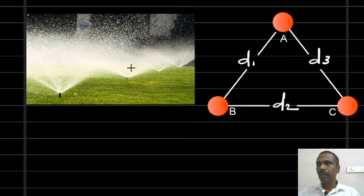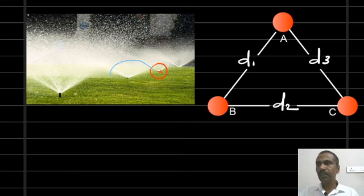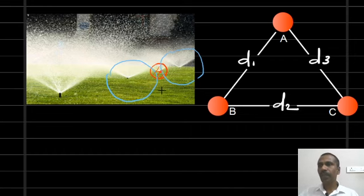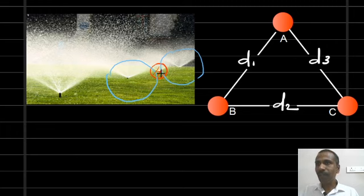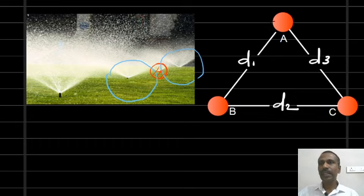Now we consider this lawn sprinkler system. This area of the lawn gets watered from this particular sprinkler, but obviously these two sprinklers will also contribute certain water droplets to that area. So this particular area gets water from three lawn sprinklers — one from that sprinkler itself, and certain water droplets from the other two sprinklers. The magnetic flux lines produced by the three phase transmission line are quite analogous to the lawn sprinkler system.